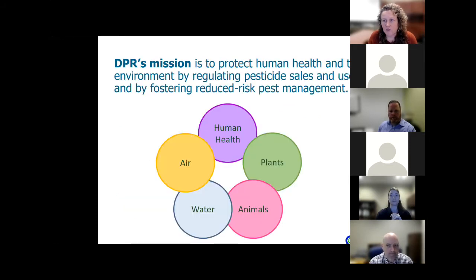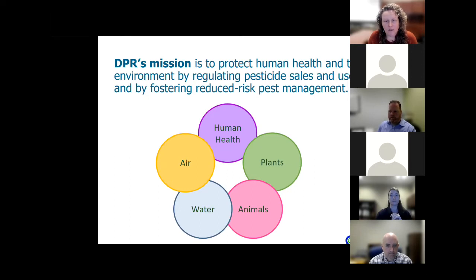DPR's mission is to protect human health and the environment by regulating pesticide sales and use, and by fostering reduced-risk pest management. One of the ways the Department fulfills this mission is through the registration of pesticide products, which involves evaluation of their potential to cause significant adverse impact on human health, plants, animals, water, and air. Another way is through the continuous evaluation process, supported by our environmental monitoring, both of which you'll hear more about today.